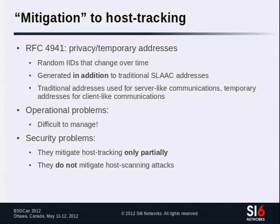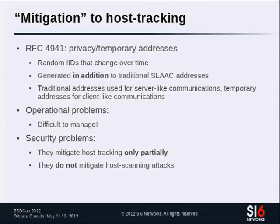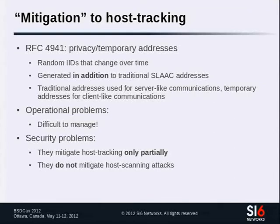Another problem is that privacy addresses are used in addition to SLAAC addresses, not as replacements. Even when tracking a host using privacy addresses is harder, it's not impossible. If a web server obtains a host's SLAAC address once, it can later send a probe to that stable address to check whether the same system is present on another network. As long as any address uses a globally unique value, hosts will still be trackable.